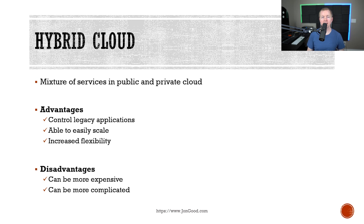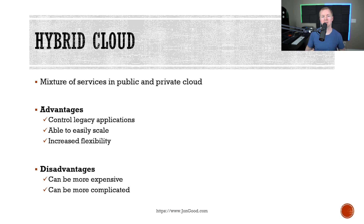The hybrid cloud is a combination of the public cloud and the private cloud that can provide a lot of advantages. For instance, you can control those legacy applications that are unique, but if you have something that's just standard, you can put it up in the cloud. You also have that agility and scale as you go, and overall increased flexibility for your needs. The disadvantages are that this can be a little more costly because of CapEx needs for legacy applications hosted within your private cloud, and it can be more complicated to set up and manage because you have to make sure the two talk together.